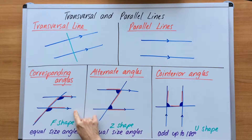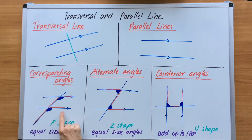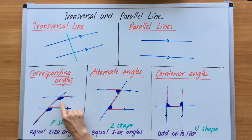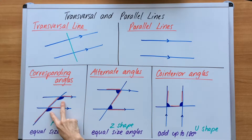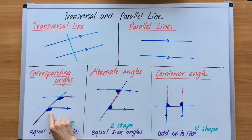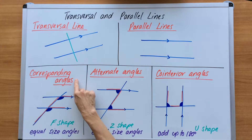First of all, we're going to look at corresponding angles. This is the F shape where equal size angles occur. You've got this transversal line cutting through a set of parallel lines and you can see that this mirrors this. If I was to cut that out and paste it on top of that, it would be identical — the angle is in exactly the same spot. It's like saying we've got an F shape here and under the armpits of the F are identical, equal sized angles. So this is corresponding angles.